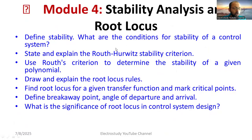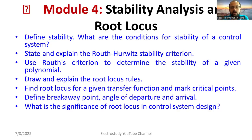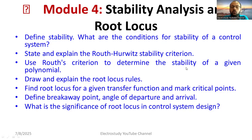Module 4 covers root locus and Routh-Hurwitz criteria. Study: what is stability, what is BIBO criterion, what is Routh-Hurwitz criterion (necessary and sufficient conditions). For the Routh array, check the first column — if all elements are positive, the system is stable; if any element is negative, the number of sign changes equals the number of poles in the right half of the s-plane. Explain this concept elaborately.